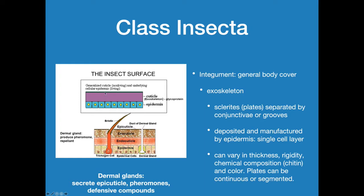On the outside of the cuticle is an epicuticle. The epicuticle is a waxy-like coating. Some people can actually control fleas in their house using what's called diatomaceous earth. Diatomaceous earth is silica — very microscopic, glass-like shards that will scratch up the surface and start scratching off this epicuticle. That allows the escape of fluids and the insect will dehydrate and die. So it's used for flea control, garden pest control, that type of thing.